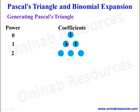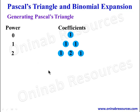For power 2, we have three terms. The first and last terms each have coefficient 1. To get the middle term's coefficient, we add the two coefficients from the preceding row: 1 plus 1 gives 2. So the coefficients for power 2 are 1, 2, 1.